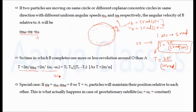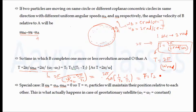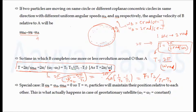Simplifying, this equals 2π divided by 2π times (1/T_2 minus 1/T_1), which gives T_1 × T_2 divided by (T_1 minus T_2). So the time in which b completes one revolution more than a is given by T = T_1 × T_2 / (T_1 minus T_2).